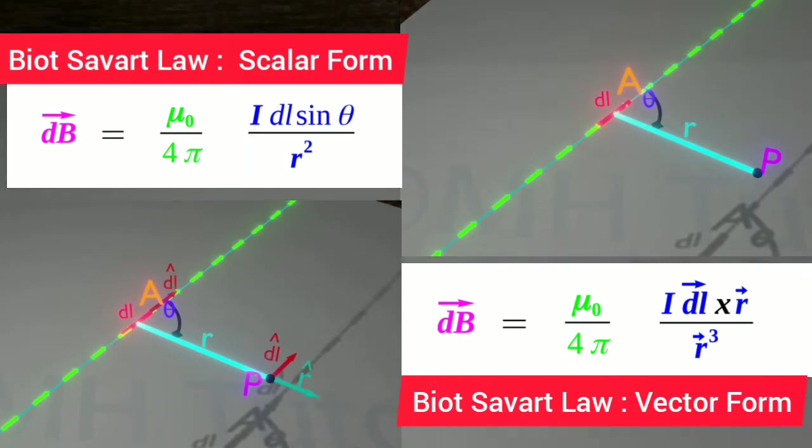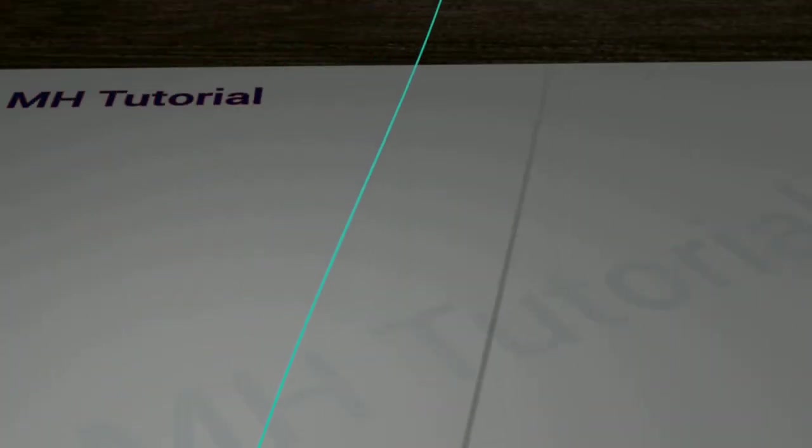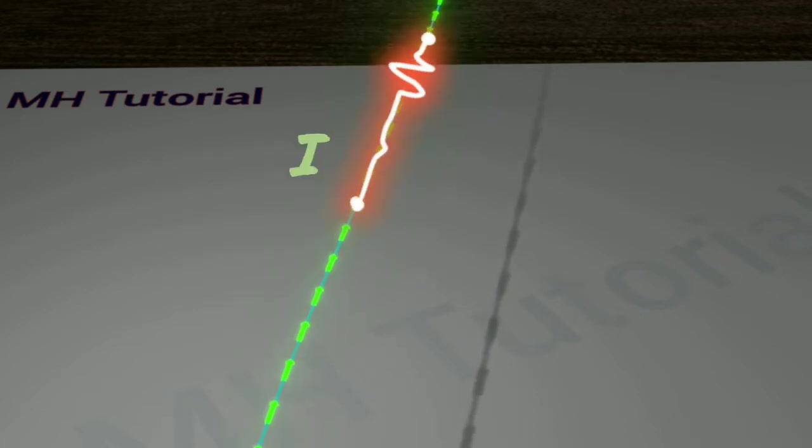To build a realistic concept on Biot-Savart law, let us first imagine a wire. It carries a current of amount I. Also, imagine a point P near the wire. All portions of the wire have their contributions in generating a magnetic field at this point P. A is an arbitrary point on the wire. A portion of the wire is taken about the point A. This portion is known DL.